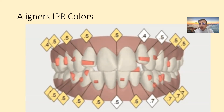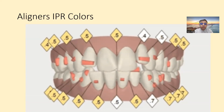If it's yellow, it means the IPR is required at the present stage. If it's white, it means the IPR will be required at a future stage. And if it's gray, it means the IPR has already been done in a previous stage.